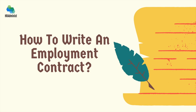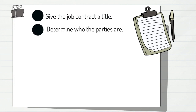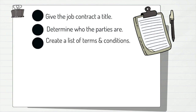Moving on to the last part of the video — how to write an employment contract. The first step is to give your contract a title so that the individual reviewing or signing it knows what it is about. Secondly, state who is entering into the contract by writing your company name and the name of the person you are recruiting. Thirdly, note that federal and state governments set minimum terms and conditions for employment contracts, including working hours and severance benefits, so it is critical to review your state and local employment legislation.